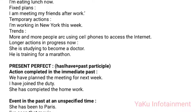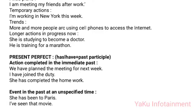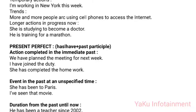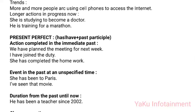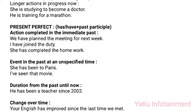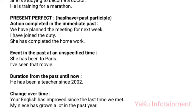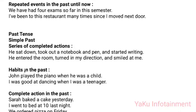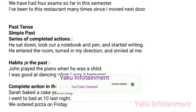Present Perfect (has/have + past participle). Uses: (1) Action completed in the immediate past: 'We have planned the meeting for next week,' 'I have joined the duty,' 'She has completed the homework.' (2) Event in the past at an unspecified time: 'She has been to Paris,' 'I've seen that movie.' (3) Duration from the past until now: 'He has been a teacher since 2002.' (4) Change over time: 'Your English has improved since the last time we met,' 'My niece has grown a lot in the past year.' (5) Repeated events: 'We have had four exams so far this semester.'